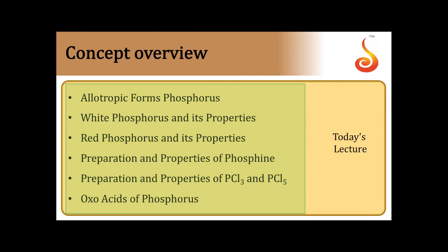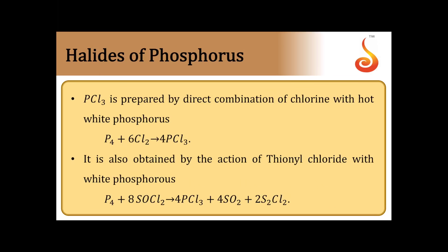So first we will be discussing the halides of phosphorus. Phosphorus forms two types of halides: trihalides, such as PCl3, and pentahalides, such as PCl5. Let us first see the trihalide, that is PCl3.